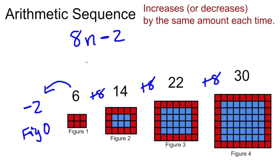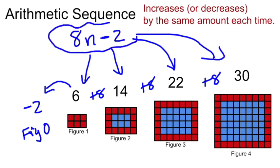Once again, eight times one is eight, minus two is six. Eight times two is 16, minus two is 14. Eight times three is 24, minus two is 22. Eight times four is 32, minus two is 30. This direct formula will work for the entire sequence. Okay, that's always going to work.